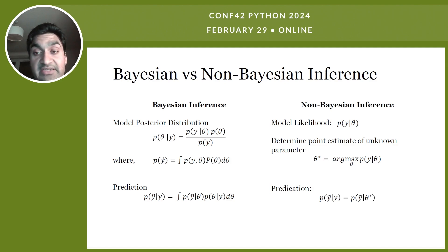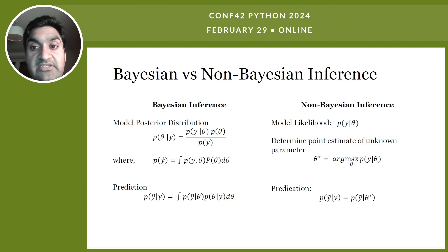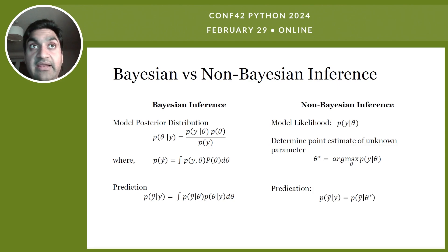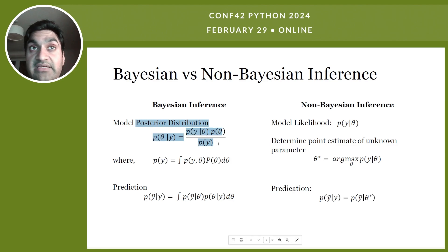In Bayesian inference, we start with our prior belief about the unknown parameter, represented as p(theta). We then compute the posterior distribution, p(theta | evidence), which is an updated distribution about the unknown parameter starting from our prior and given the new dataset. For a new instance, we compute the probability considering the entire posterior distribution rather than a single point estimate. However, this implementation is a lot more complex in practice.